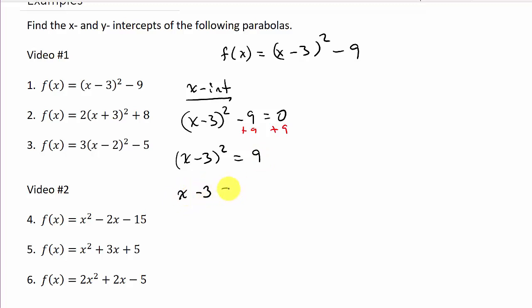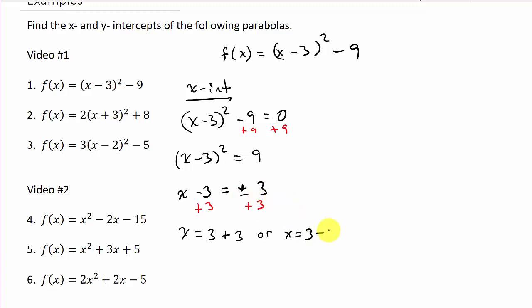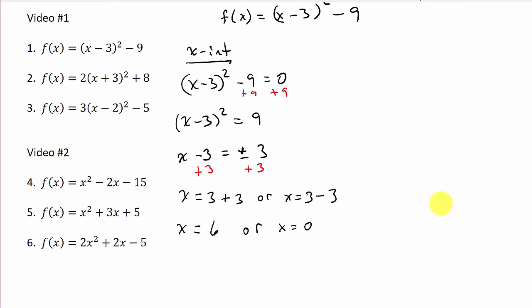Applying the square root property gives me x - 3 = ±√9, and √9 = 3. Now I add three to both sides, so x = 3 + 3 = 6, or x = 3 - 3 = 0. So the x-coordinates of the x-intercepts are x = 6 and x = 0.